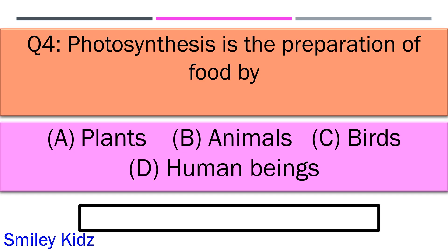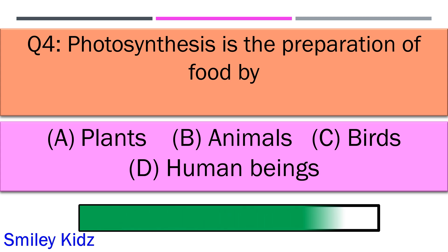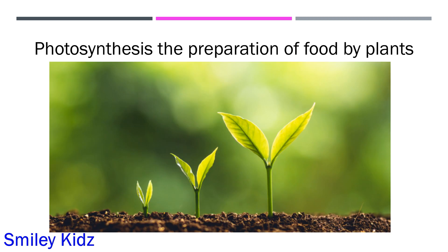Photosynthesis is the preparation of food by option A plants, option B animals, option C birds, and option D human beings. Your time starts now. And your time is up and the right answer is option A plants.